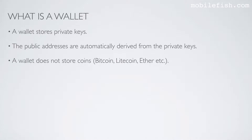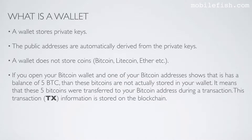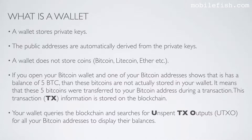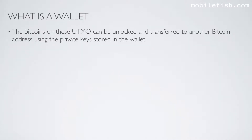A wallet does not store coins such as Bitcoin, Litecoin, Ether, etc. If you open your Bitcoin wallet and one of your Bitcoin addresses shows a balance of 5 Bitcoins, these Bitcoins are not actually stored in your wallet. It means these 5 Bitcoins were transferred to your Bitcoin address during a transaction. This transaction information is stored on the blockchain. Your wallet queries the blockchain and searches for unspent transaction outputs for all your Bitcoin addresses to display their balances. The Bitcoins on these unspent transaction outputs can be unlocked and transferred to another Bitcoin address using the private keys stored in the wallet.